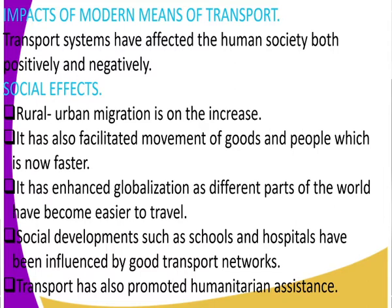For example, I can be living in Nairobi and still be working in Mombasa. We have the Standard Gauge Railway that takes five hours from Nairobi to Mombasa. Modern transport has also enhanced globalization, as different parts of the world have become easier to travel. The world has been perceived as a village — a small place you can easily access. Through modern means of transport, I can travel to all the continents within the shortest time possible. For example, for an urgent meeting in South Africa, you can pick your private jet and in about five hours you'll be there.